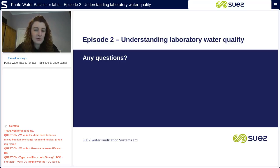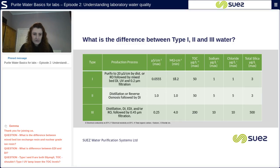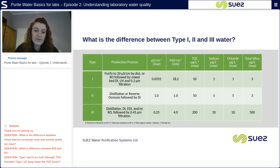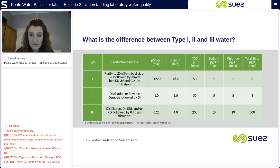Another question: type one and type two are both listed at 50 micrograms per litre TOC — shouldn't the type one UV lamp lower the TOC levels? As you can see on the slide, 50 micrograms per litre is what the standard specifies for both type one and type two waters, and this is the maximum TOC value they can be. Yes, the UV lamp in the water system does reduce TOC and bacteria, lowering the TOC in the water. However, the standard says TOC can be up to 50 micrograms per litre — that is the maximum — so the UV lamp will reduce the TOC below that.